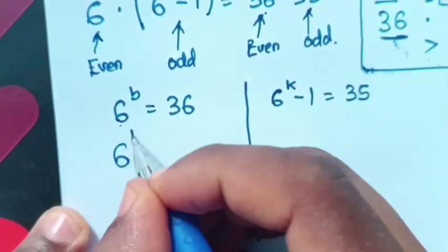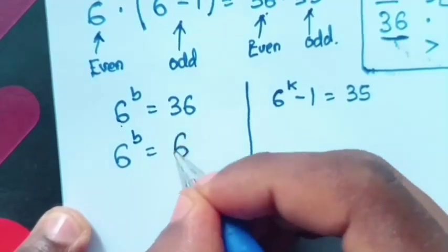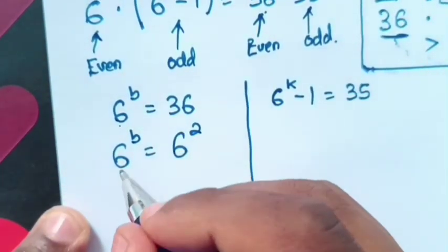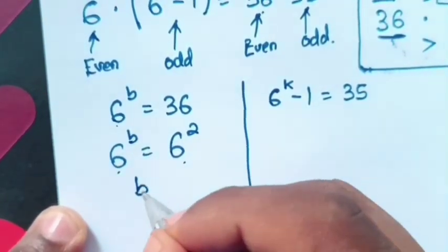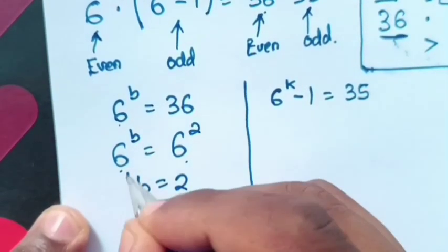So, here it will be 6 power b is equal to 6 squared. Then, same base, we compare the powers. So, b is equal to 2.